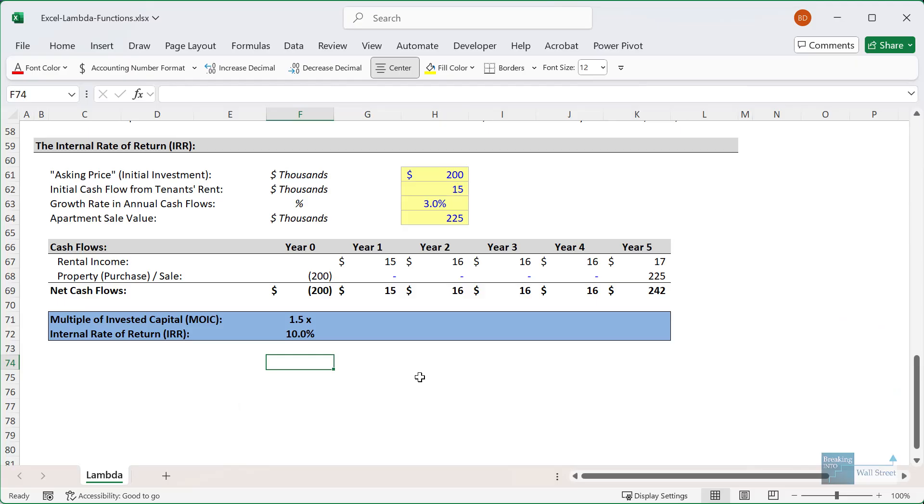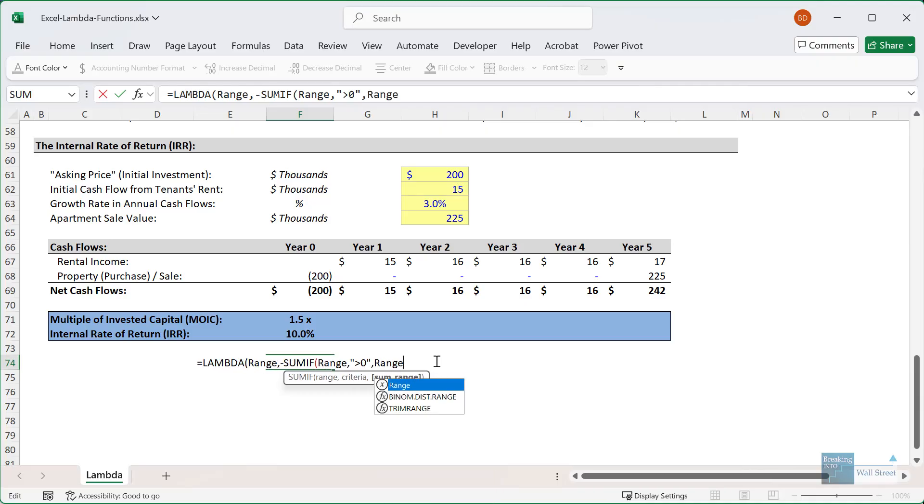So I've gone back to a version of this file where there is no multiple of invested capital function defined anymore. And I can type lambda, and then range for whatever range of cells we want to apply this to. And then we can use the same SUMIF function that we're using in the traditional function right here, except now we're wrapping it inside this lambda function syntax. And I'll say SUMIF range, we still need to have double quotes and greater than zero, this is just how you enter it in Excel. And then the sum range will just be the range that we're entering right here. And then I'll divide by another SUMIF and say range, and then less than or equal to zero, and then range once again.